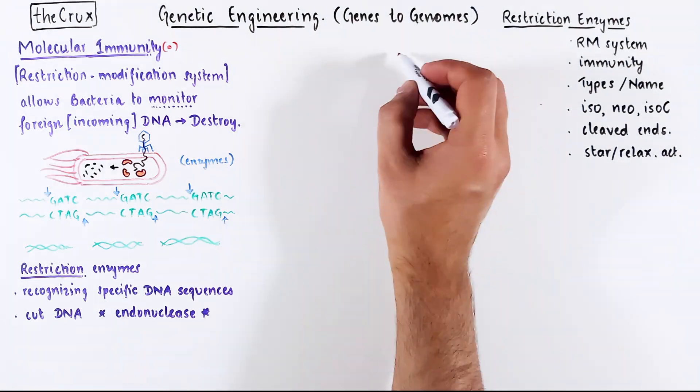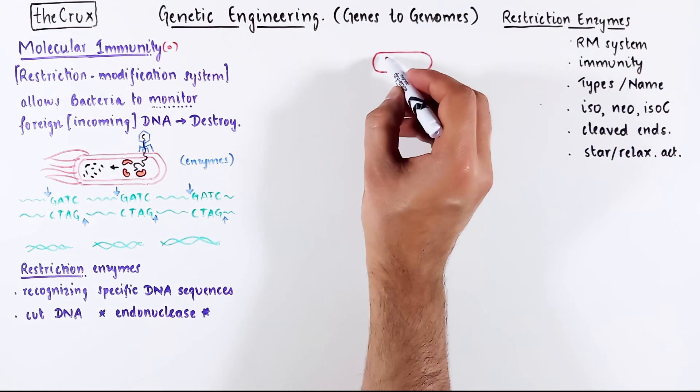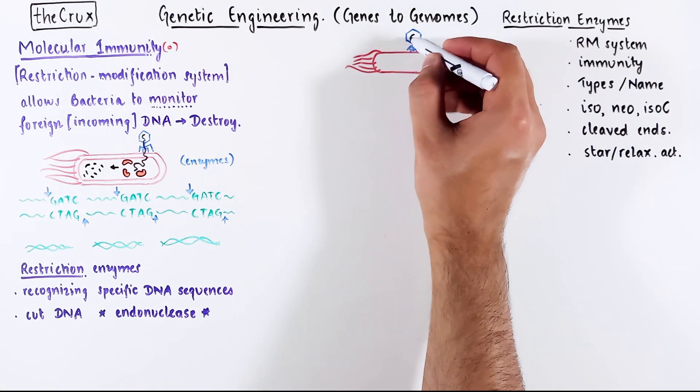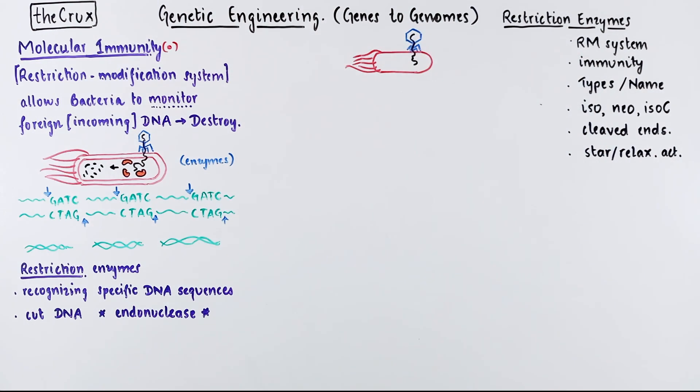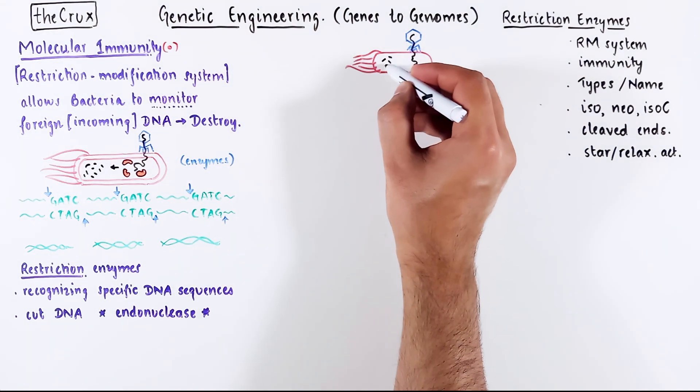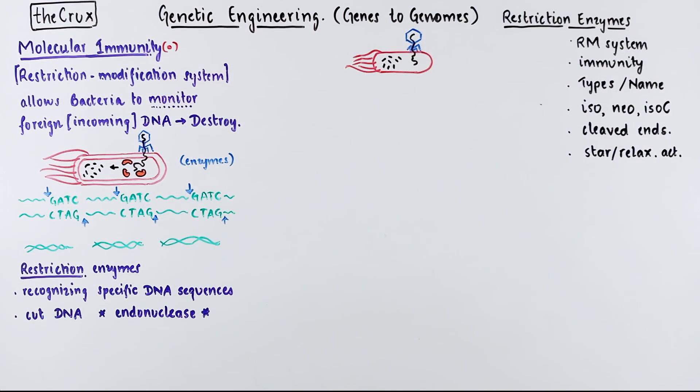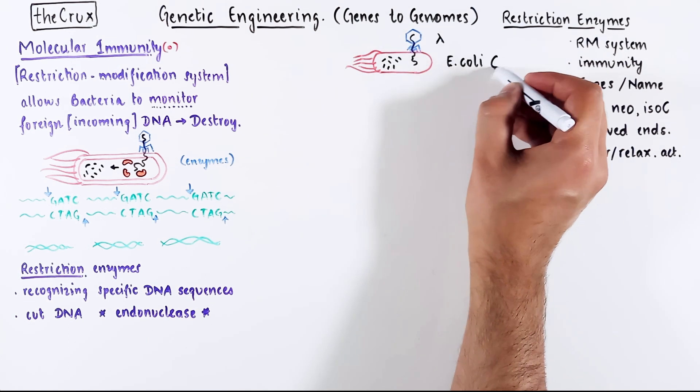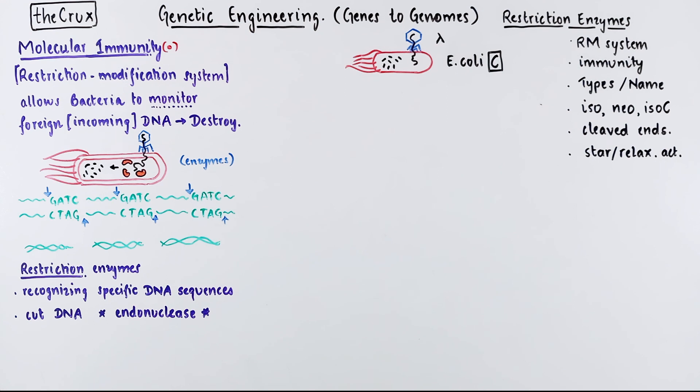Now we can start peeling a few more layers and understand how this immunity actually works, because I haven't explained about the modification part of this immunity. Imagine that this happy bacteria is attacked by a bacteriophage. By the logic of immunity, we expect on this first encounter, the bacteria will destroy the virus DNA. And for the sake of discussion, let's say that this is a lambda bacteriophage, and the E. coli is a special strain called C. These are just names, so don't overthink them for now.